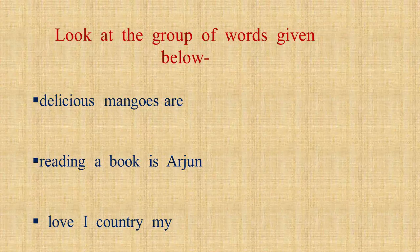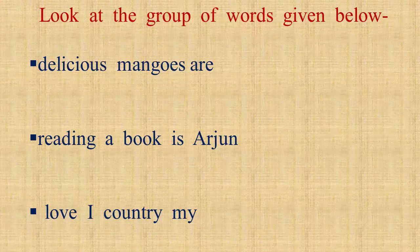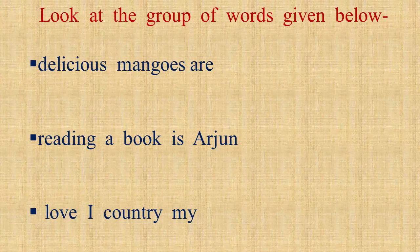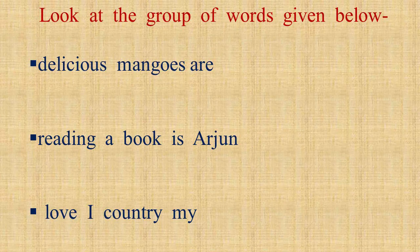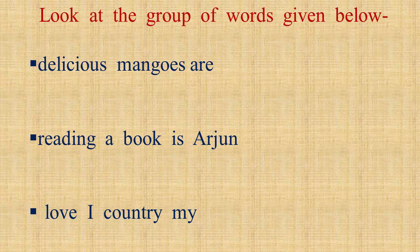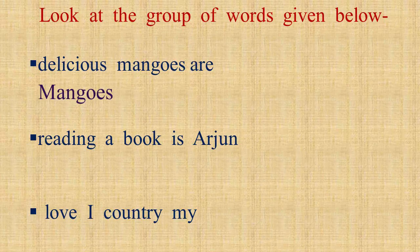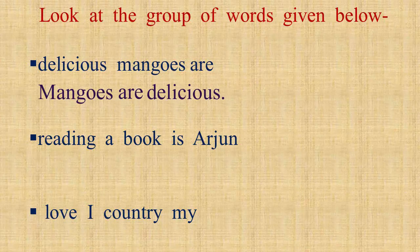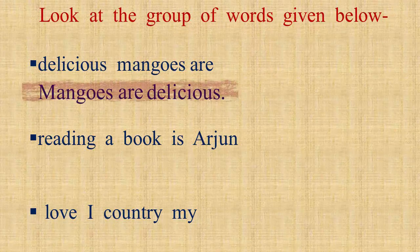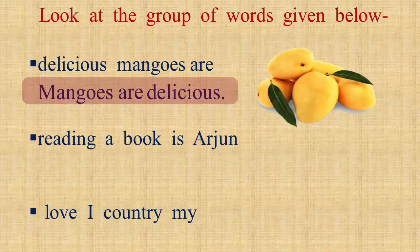To make things clear, look at the words below: 'Delicious mangoes are.' Do you understand any meaning out of these jumbled words? Perhaps no. We will change the order of words and put it this way: 'Mangoes are delicious.' Now it becomes a meaningful sentence which tells that mangoes are delicious fruits.